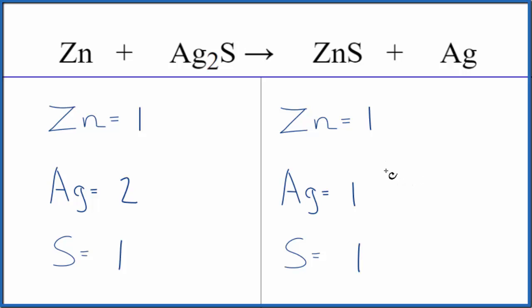So this is a fairly straightforward equation to balance. Everything's the same except the silver atoms. The silver is all by itself so when we change the silver that won't change the zinc or sulfur, it'll just fix the silver.